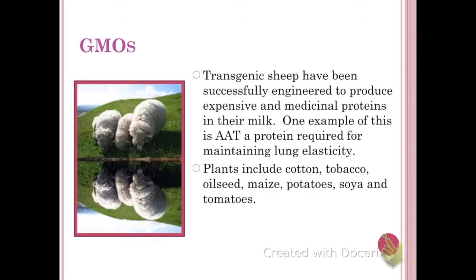However, there has been some success. One example is transgenic sheep, which have been used to make expensive medical proteins in their milk. One example is a protein required for maintaining lung elasticity called AAT — people who have a deficiency of this protein needed it. Artificial manufacturing of AAT was pretty unsuccessful, but sheep were modified so that their mammary gland would produce the AAT in their milk, which can then be isolated and used in medicine.